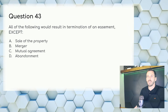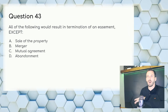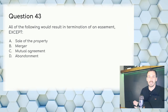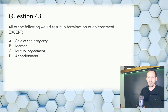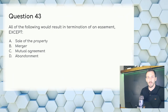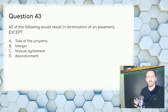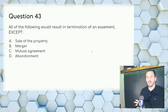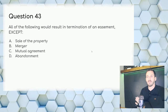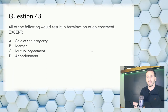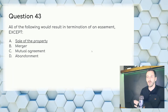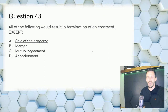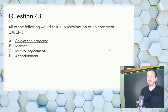Question 43: All of the following would result in termination of an easement except — easements run with the land, meaning when the property sells the easement transfers too. Answer: A, sale of the property.